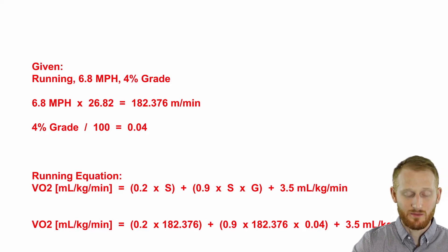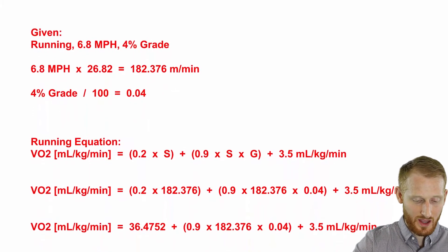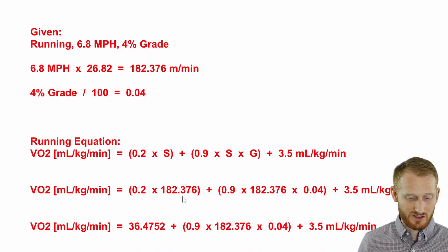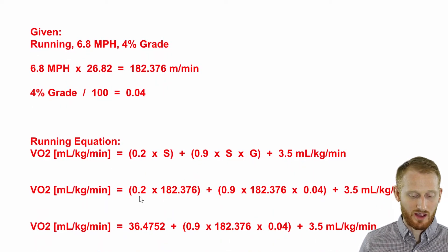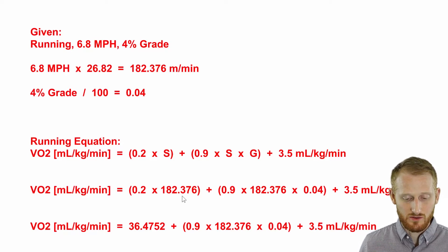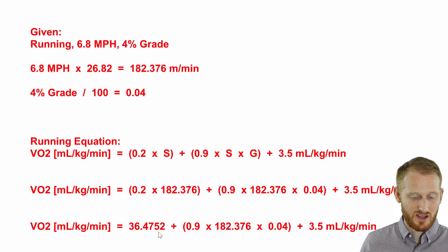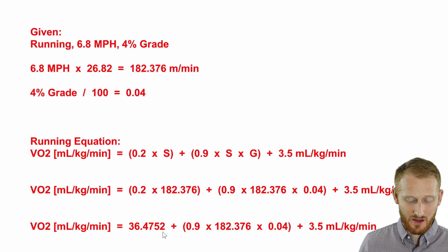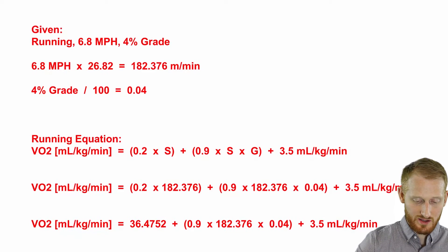So let's start doing this step by step. So the first thing I'm going to do is the first set of parentheses, where I'm going to multiply together the 0.2 times 182.376, and I end up with 36.4752. The next thing I'm going to do is start working on this second set of parentheses.